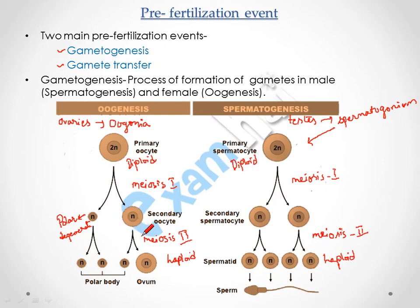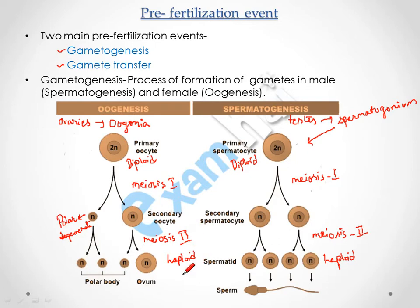After the secondary oocyte undergoes meiosis II, it forms two unequal cells: one becomes the polar body, which is non-fertile and degenerates, while the other retains more cytoplasm and is ready for fertilization. Meiosis II takes place only when a sperm enters the ovum; otherwise, the cell remains as a secondary oocyte.